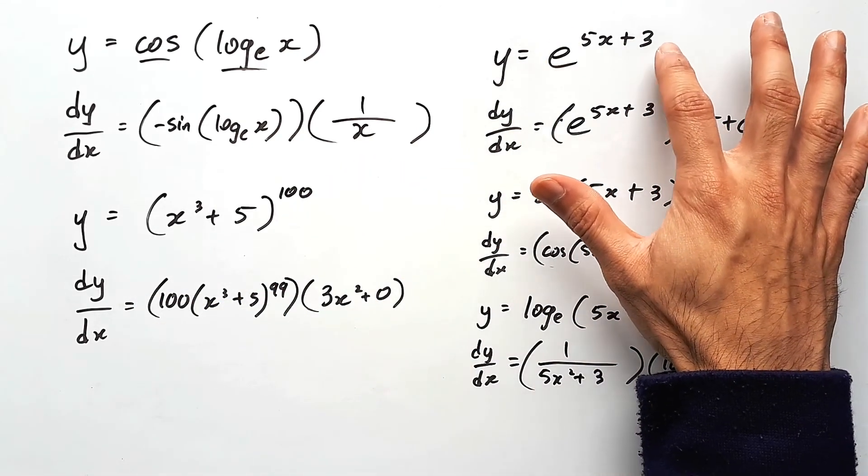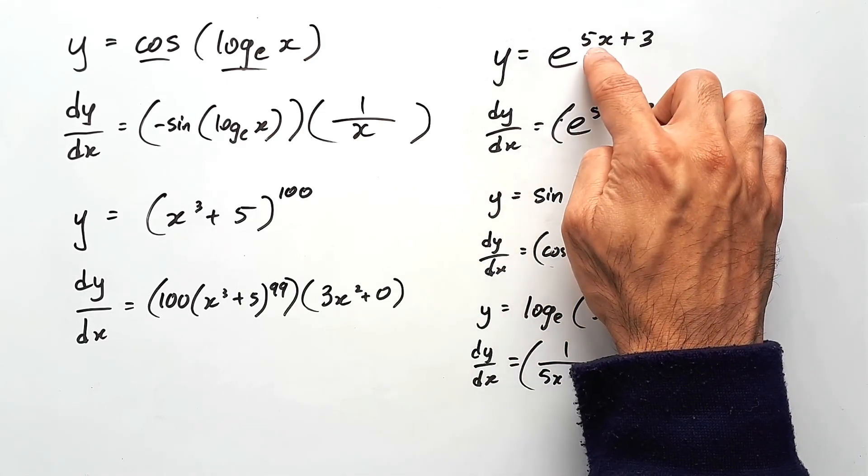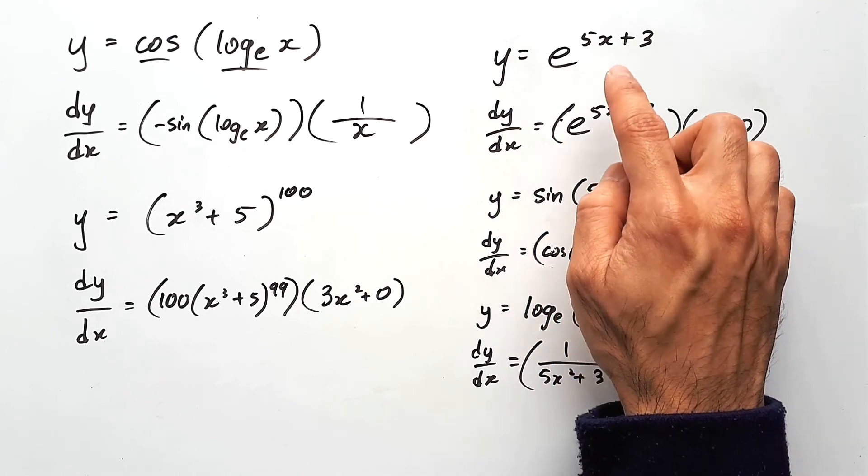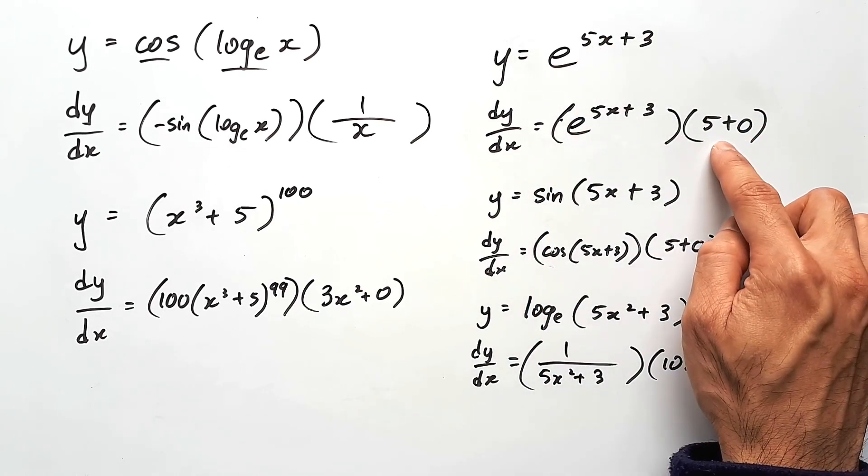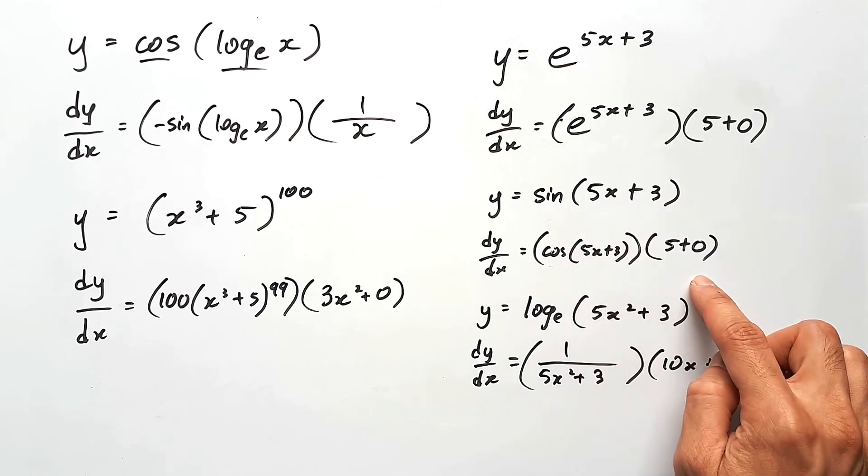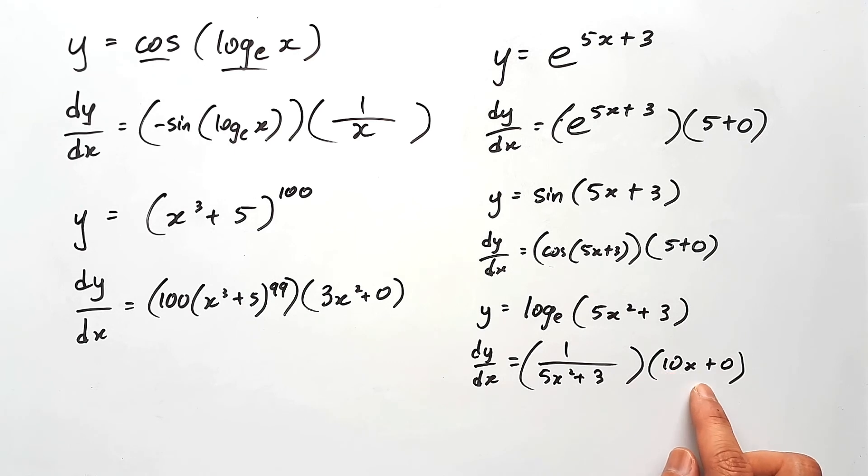I would pay special attention to these because there are some formulas out there that provide a shortcut for where you can just bring the 5 out to the front for example. But keep in mind that it's actually a chain rule where the 5 is being differentiated and that's why it's here. And this is the same for all of them. In this case it's an x squared and so you would end up with a 10x, you're not just bringing a 5 out to the front.